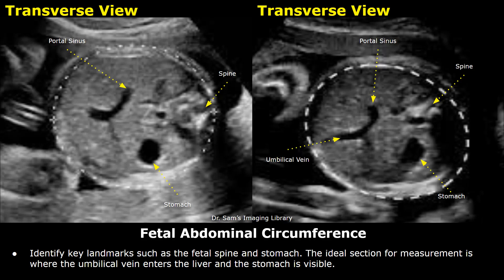Hello everyone, this is Dr. Sam, and today you will learn how to measure the fetal abdominal circumference on ultrasound. Abdominal circumference is one of the biometric parameters used to estimate the gestational age and estimated fetal weight.